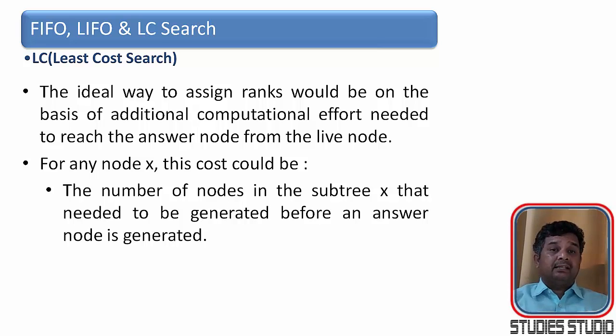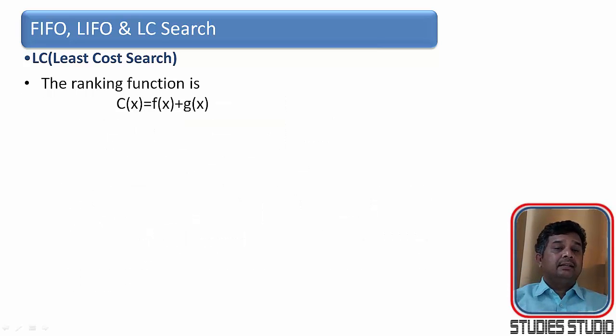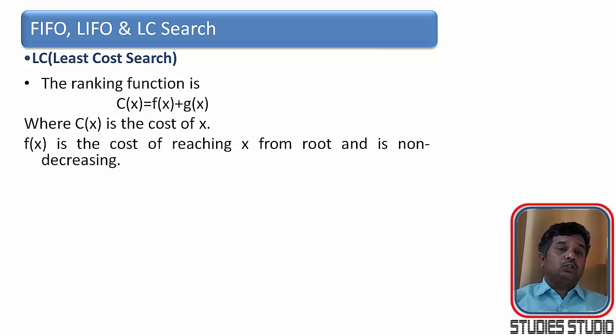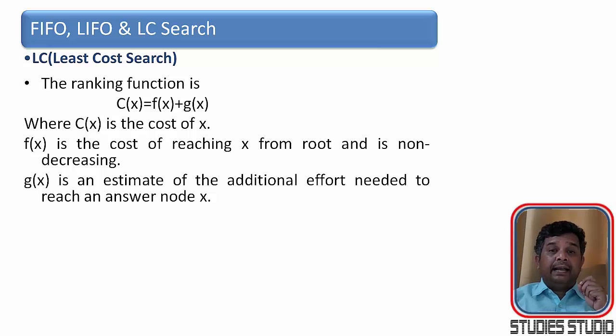The ideal way to assign a rank function would be on the basis of additional computation effort that is needed to reach the answer node from the live node. For any node X, the cost would be the number of nodes in the sub-tree X that is needed to be generated before an answer node is generated. The number of levels the nearest answer node is from X. The rank function will work like this. C(X) is the rank function. And it is the summation of two functions F(X) and G(X). Where C(X) is the cost function. And F(X) is the cost for reaching X from root in a non-decreasing manner. And G(X) is the estimate of the additional effort needed to reach an answer node.